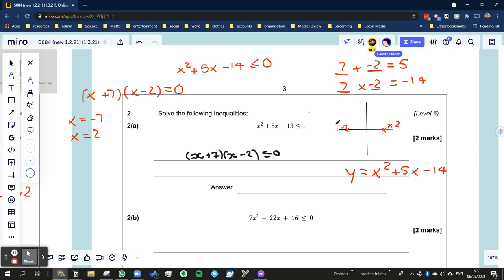In fact, I could write those as coordinates, couldn't I? Because we know what the y value is going to be. The y value is going to be 0. So it would probably be a bit better to do that. So this coordinate is going to be negative 7 and 0. And this coordinate is going to be 2 and 0 because that's where the graph would intercept the x-axis because that's where y would be 0.